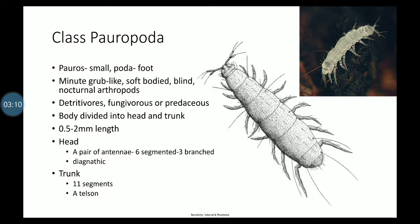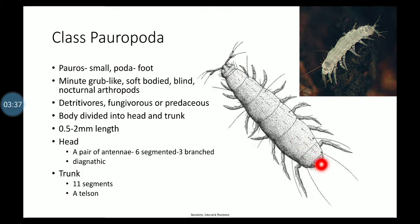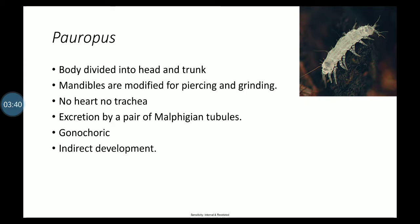The body is divided into a head and trunk. They normally measure about 2 mm. The head bears a pair of six-segmented antennae with three branches. The mouthparts are gnathic, made up of one pair of mandibles and one pair of maxillae. In the trunk, there are 12 segments with a telson. An example is Pauropus. The mandibles are piercing and grinding.